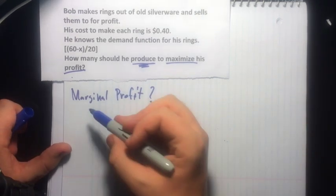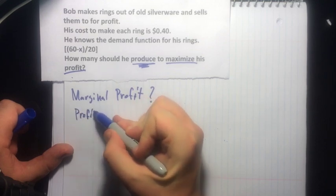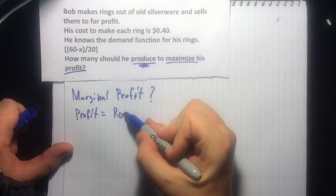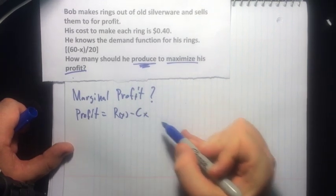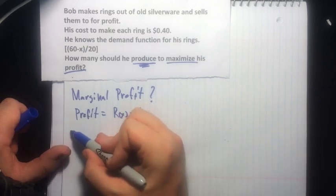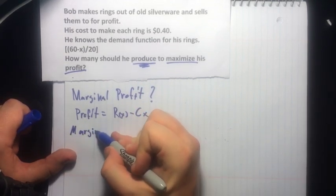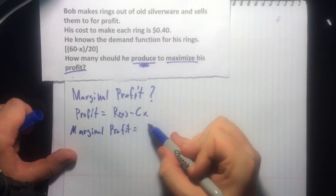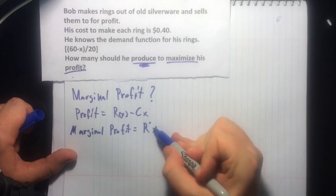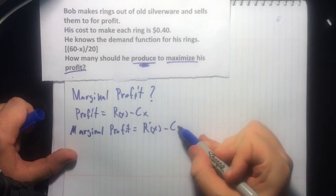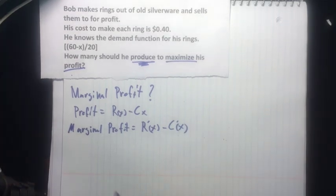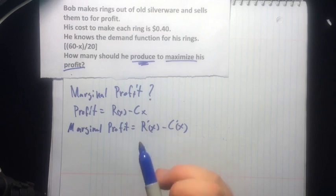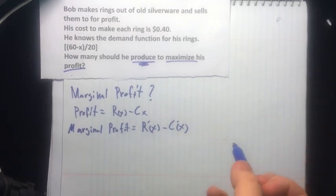So if our profit equals our revenue minus our cost, understanding the marginal profit is going to equal R'(x) minus C'(x). So that's going to let us know how much profit we'll make for our next unit.